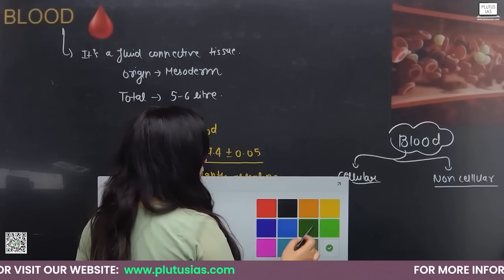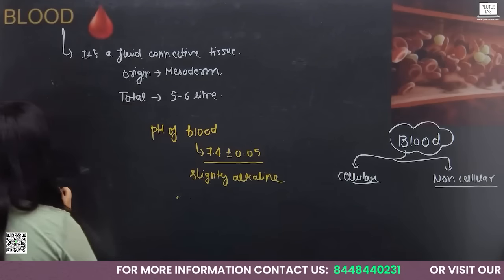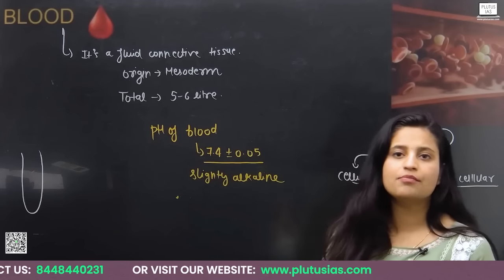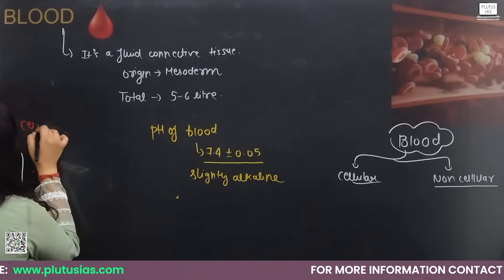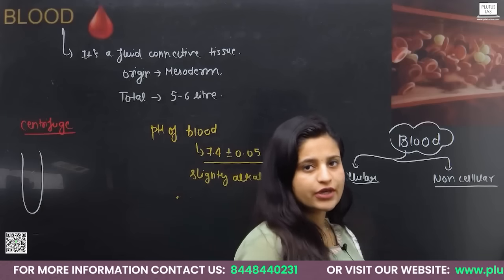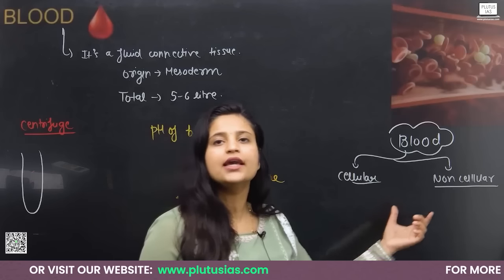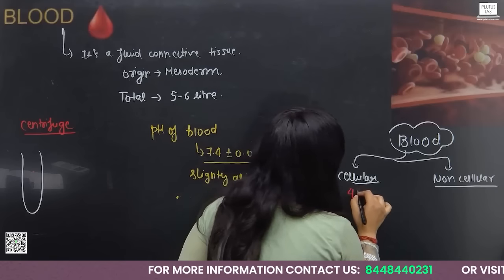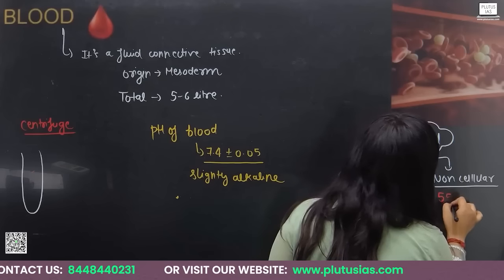After collecting blood in a test tube, we keep it in a machine called the centrifuge. After the process of centrifugation, blood is divided into two things: cellular components and non-cellular components. The amount of cellular components is 45% and the amount of non-cellular components is 55%.